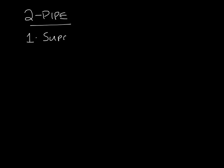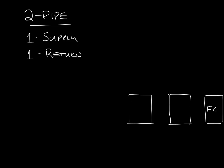In a two-pipe system you have a supply line and a return line. So let's say you have a couple fan coils on a two-pipe system. We'll draw in three fan coils here. So you would have a supply line running to your fan coils and then your return line running away from them.